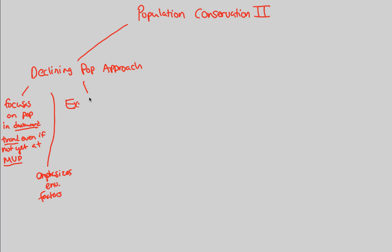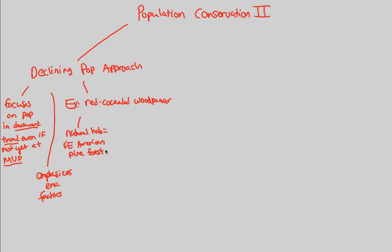Our example will be the red-cockaded woodpecker. In this woodpecker, we're going to first understand its natural habitat — a good point to start whenever you're looking at any sort of population conservation. The natural habitat is Southeast America, specifically the pine forests. There are two main components that make it choose this habitat.